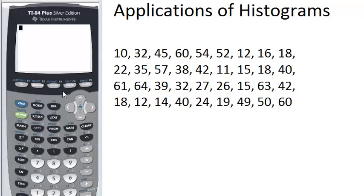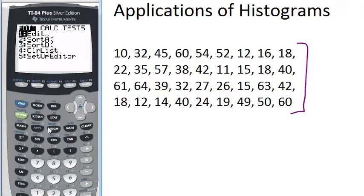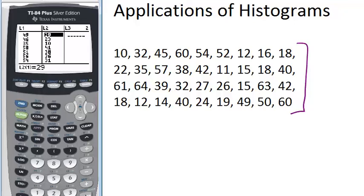So we have our calculator here and we have a set of data. Let's suppose we want to organize this data into a histogram. The first thing you want to do is go into the stat menu and select edit, and you're going to make a list of your data. You just need one list. So I'm going to clear out list 2 and clear out list 1.